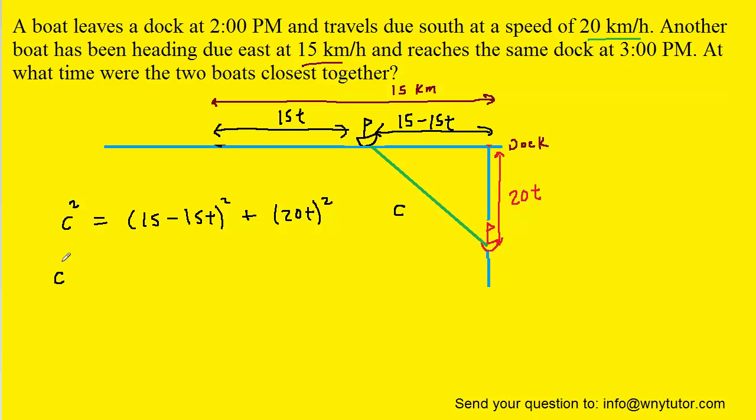So we're going to go ahead and take the derivative now. The left side would just become c squared prime, just simple derivative notation. Right side, we're going to have to use a chain rule. So we'll pull the 2 down, we'll recopy the inside of the parentheses, we'll subtract 1 from the exponent to make this to the first power, and then we have to multiply by the derivative of the inside, which is negative 15. Same idea with this term, we'll pull the 2 down, recopy the inside, subtract 1 from the exponent, and then multiply by the derivative of 20t, which is 20.